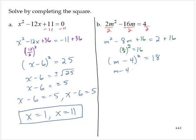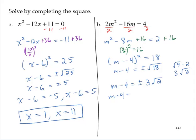So then m minus 4 equals the positive or negative square root of 18. The square root of 18 is not a nice number. We can break up the square root of 18 as the square root of 9 times the square root of 2, which we can write as 3 times the square root of 2. So then m minus 4 equals positive or negative 3 times the square root of 2. Adding 4 to both sides: m equals 4 minus 3 times the square root of 2, and m equals 4 plus 3 times the square root of 2.